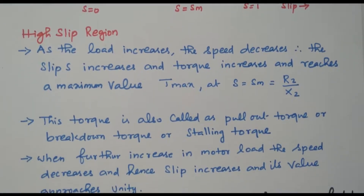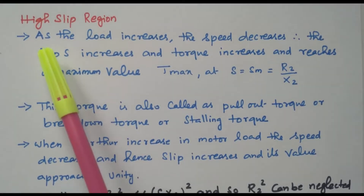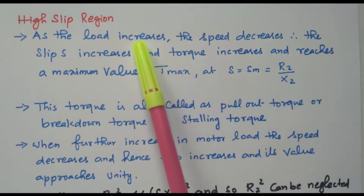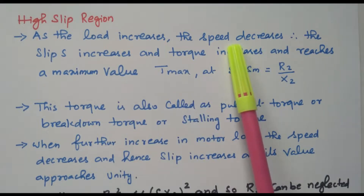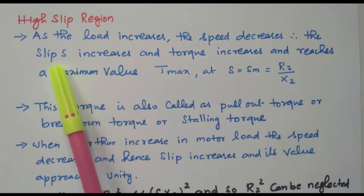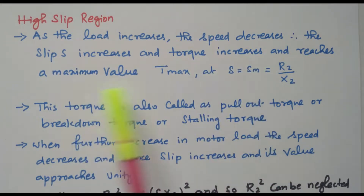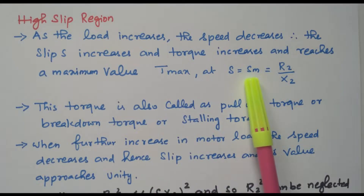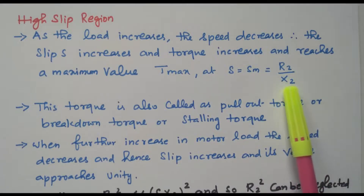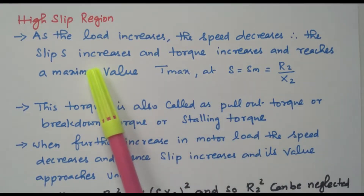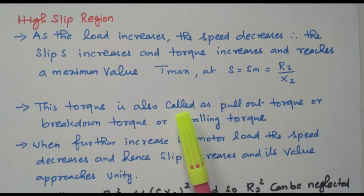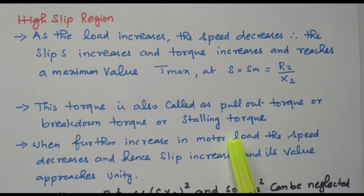During the high slip region, as load increases, speed decreases, and slip increases. The torque increases and reaches the maximum value at S equal to S_M, where the condition is R2/X2. This is the condition for maximum torque. As load increases and speed decreases, slip increases, and torque reaches the maximum value. This maximum torque is called the pull-out torque, breakdown torque, or stalling torque.